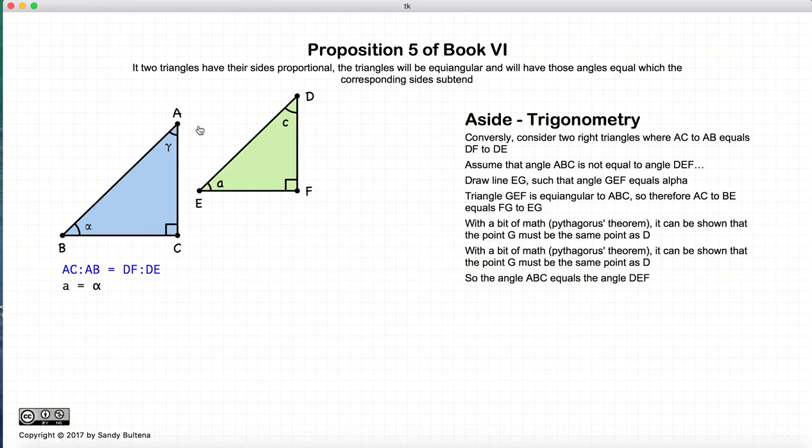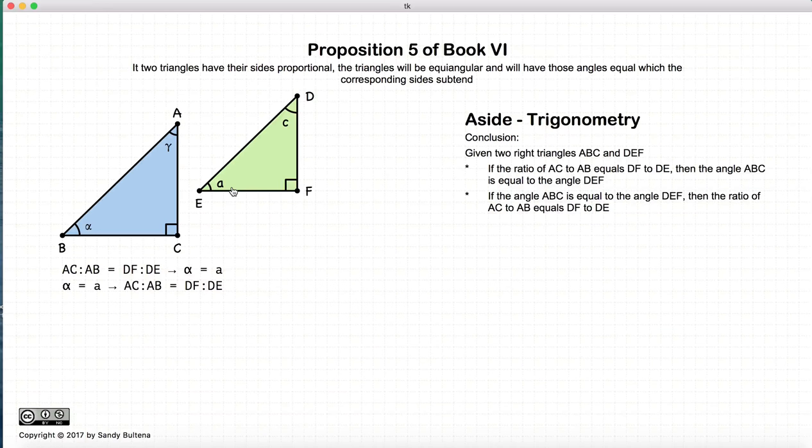But anyway, what I've shown here is that if we take the ratio of AC to BC, and if it is equal to DF to DE, two right-angled triangles, then alpha is equal to A. All right? So this is what I've just demonstrated, is that if the ratios are the same, then the angles are equal. If the angles are equal, the ratios are the same.